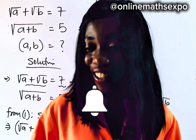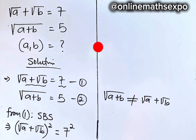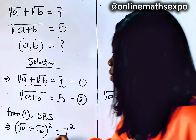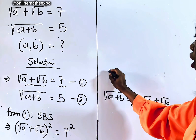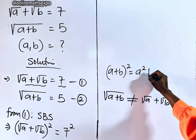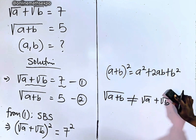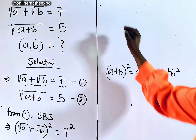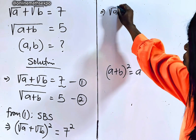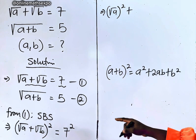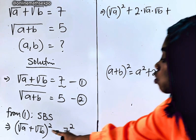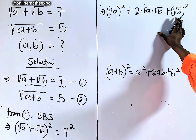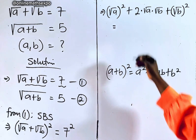How do you expand that? Just remember: for every (a + b)², it is a² + 2ab + b². We apply it here. So we get (√a)² + 2·√a·√b + (√b)², which equals 7² = 49. Now √a multiplied by √b is the same as √(ab) inside one square root.